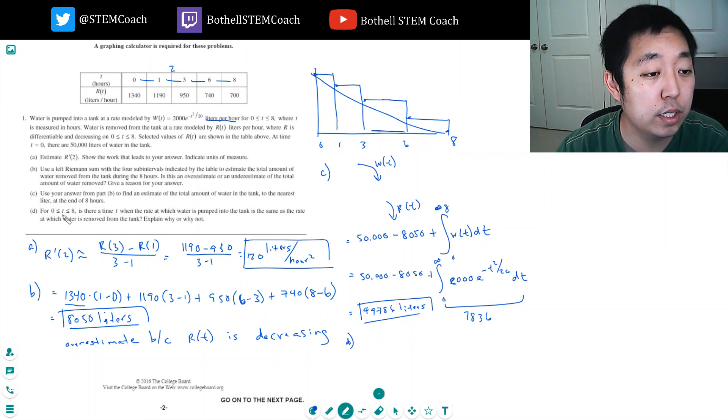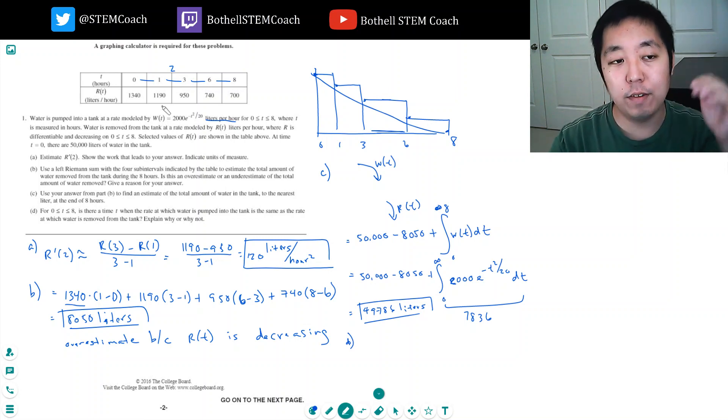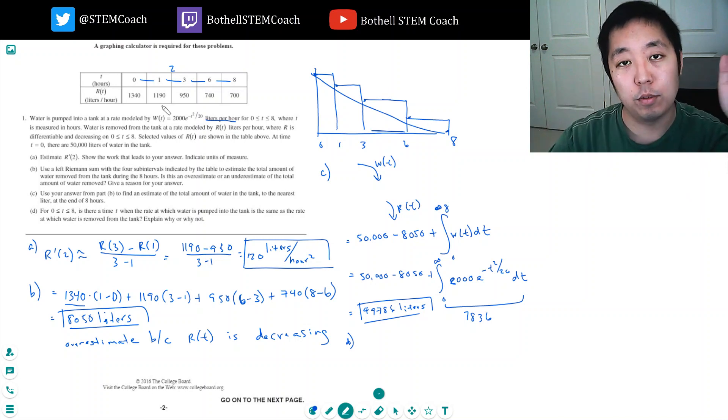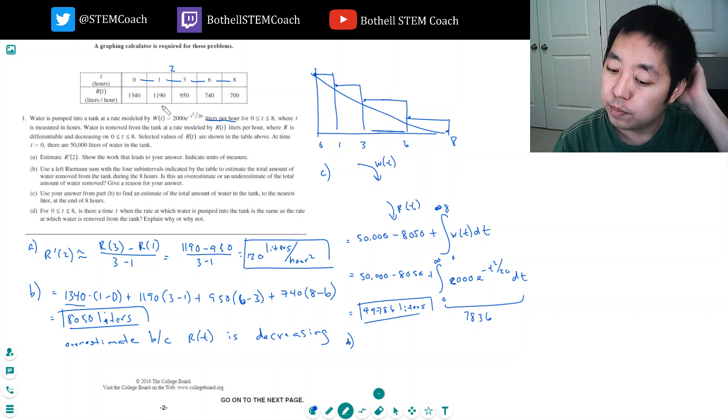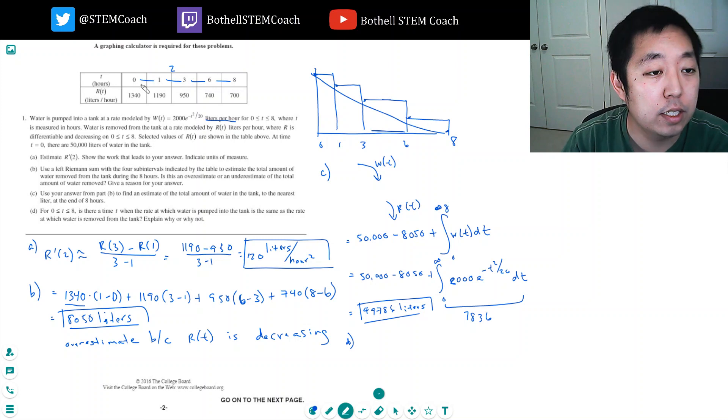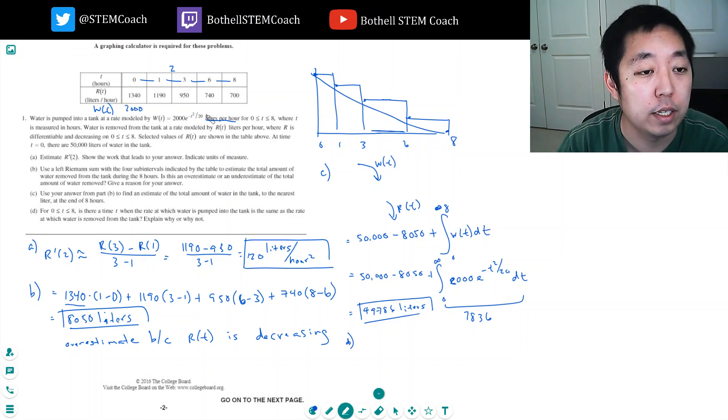Part d: For 0 ≤ t ≤ 8, is there a time t when the rate at which water is pumped into the tank is the same rate at which water is removed from the tank? We want to know if the rate is ever equal. You would think of it as: if it's ever above r(t) and then below r(t), then it must have crossed through by the intermediate value theorem. Let's fill in this table for w. w(0) is 2000 if I just plug in zero. w(1) is 2000 times e to the negative 1 over 20, which is 1902.